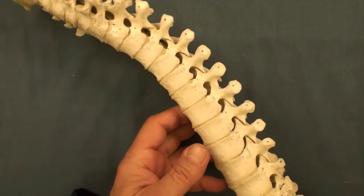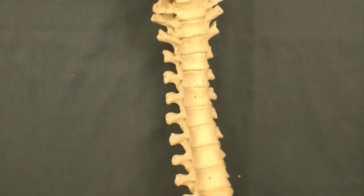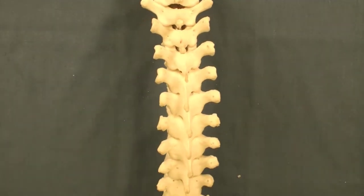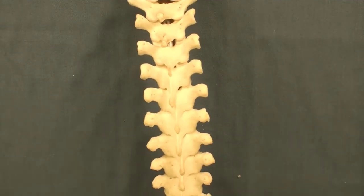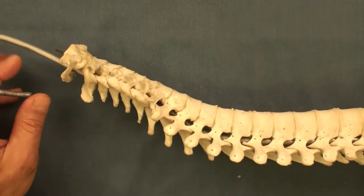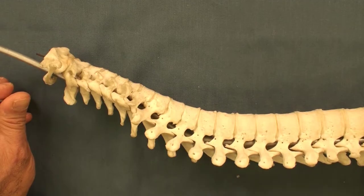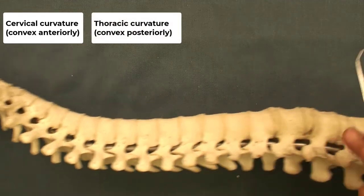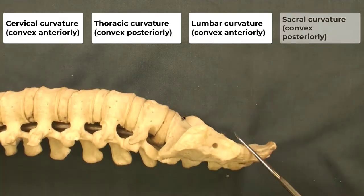When we look at the vertebral column, or spinal column, on the anterior or posterior view, there is a straight line with no deviation in the spine. However, on the lateral view, we can see curvatures along the vertebral column: the cervical curvature, the thoracic curvature, the lumbar curvature, and the sacral curvature.